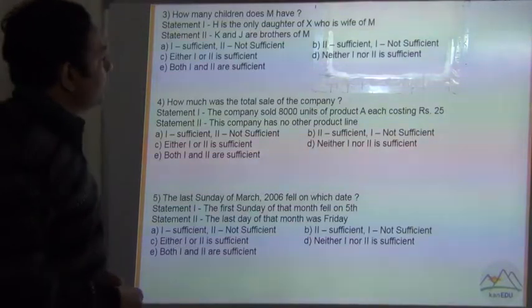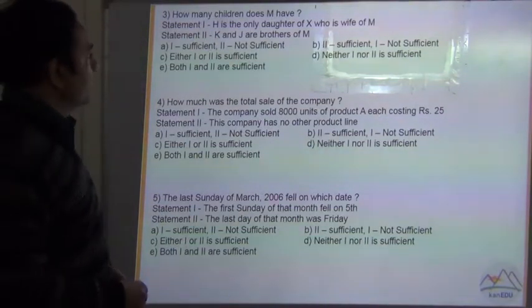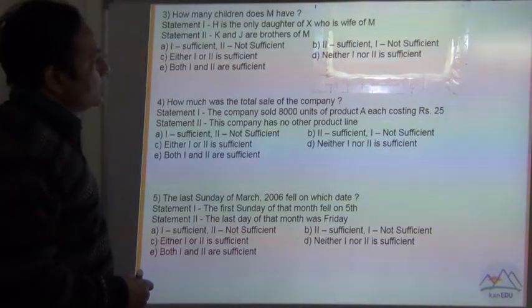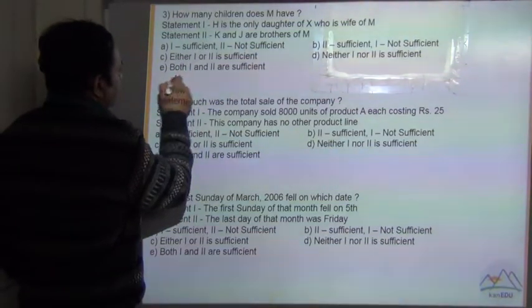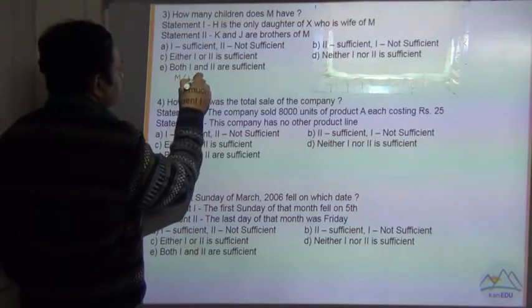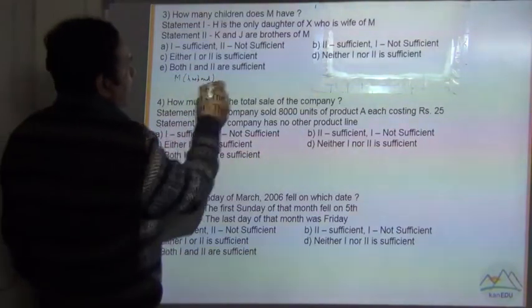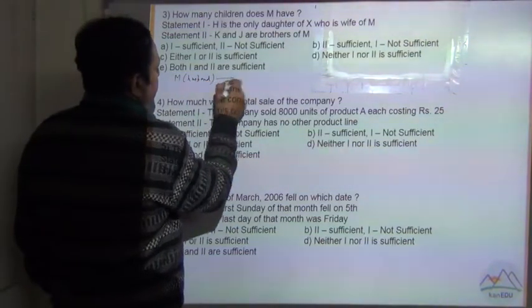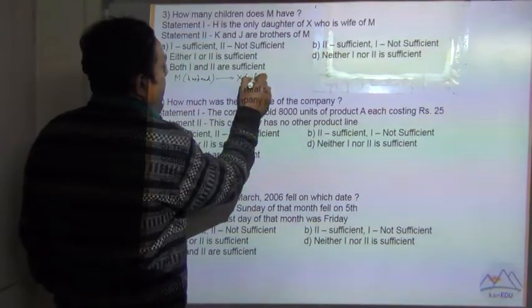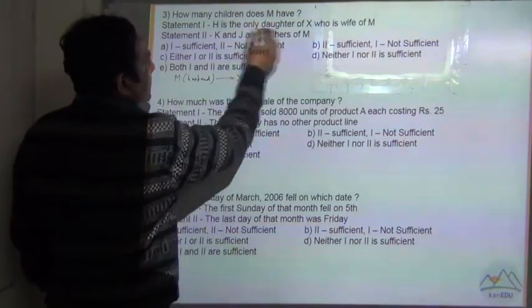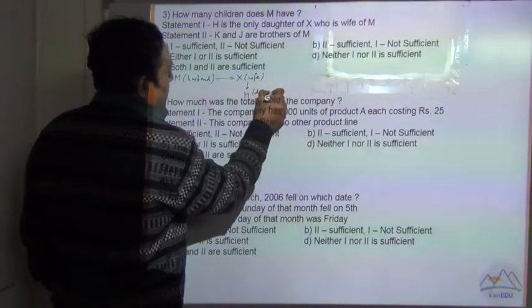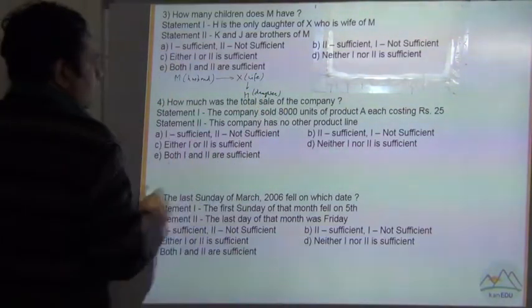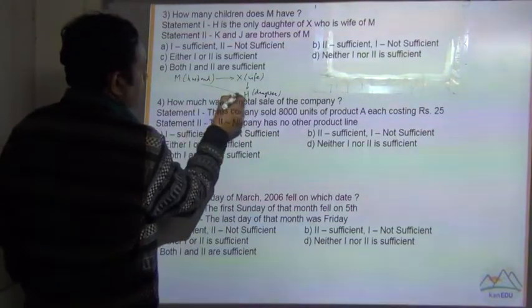Question number 3: How many children does M have? Statement 1 says that H is the only daughter of X who is wife of M. It means M is husband, his wife is X, and H is the only daughter of X. Now H is also the daughter of M.